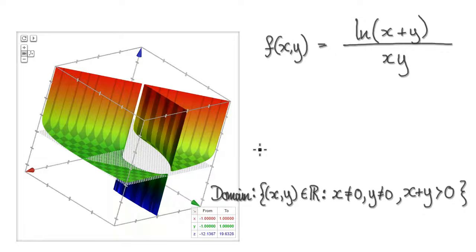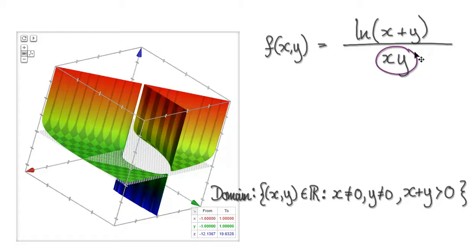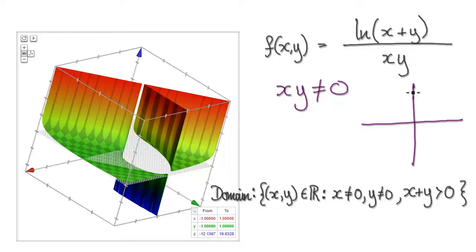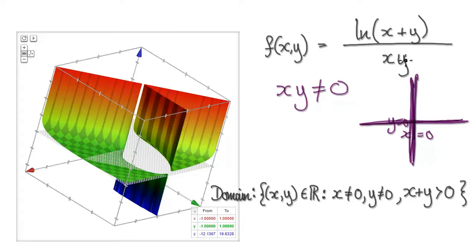Next example. What is the domain for this function? When would this thing break down? It would break down when xy equals 0, so we need to demand that xy cannot be 0. That means it can't lie on the x-axis where y equals 0, and it can't lie on the y-axis where x equals 0.